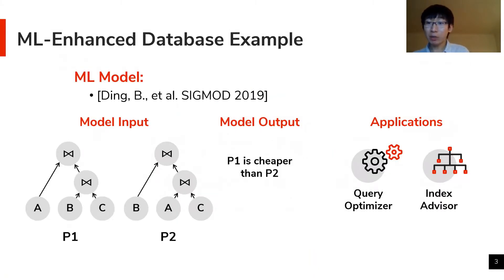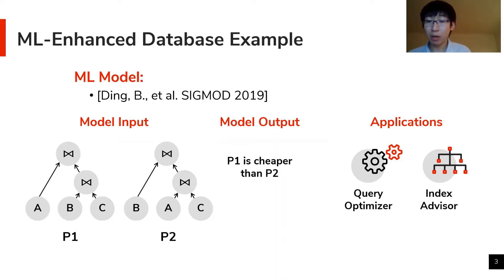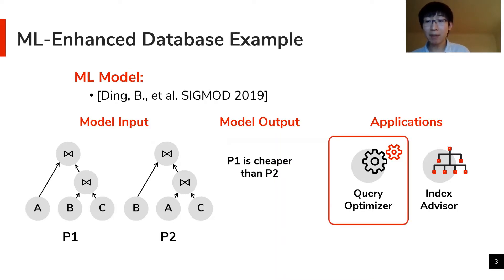In this experiment, we used a state-of-the-art machine learning model built for databases published in SIGMOD last year. The model takes two query plans as input, featurized by the plan information such as operators, and then predicts which plan is cheaper. There are many potential applications of this model; I'll exemplify the application in the query optimizer, but the similar concept applies to other applications as well.